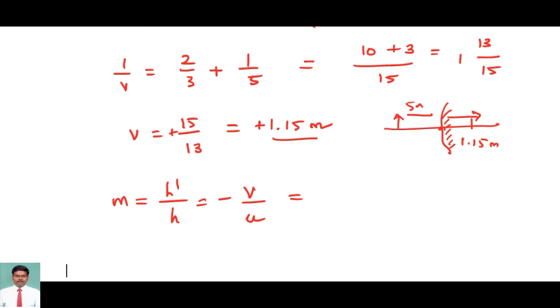We know the value of v and u. v equals 1.15 and u equals 5 meters. Here 1.15 is plus. Always write the Cartesian sign convention: u is minus.